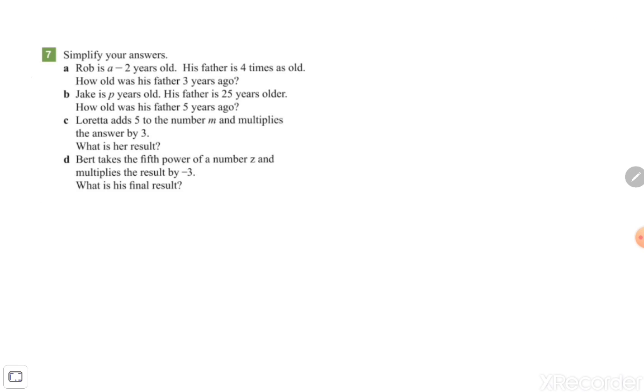The question is Rob is a minus 2 years old, which means you have no clue what the age is from Rob. But if you have your a and subtract 2, then you know his age. So we're going to call it a minus 2 years old. We start with a minus 2, his father is 4 times as old.